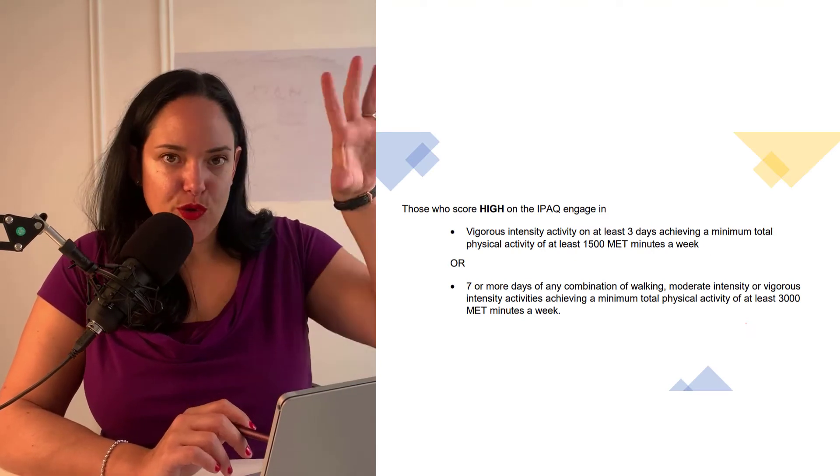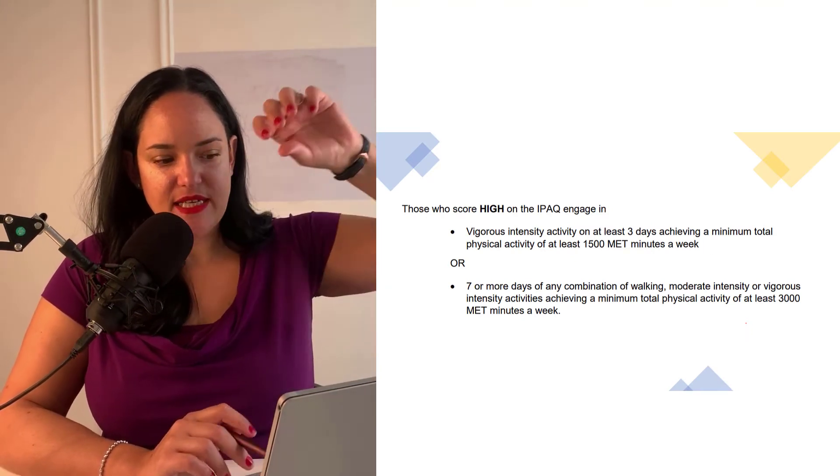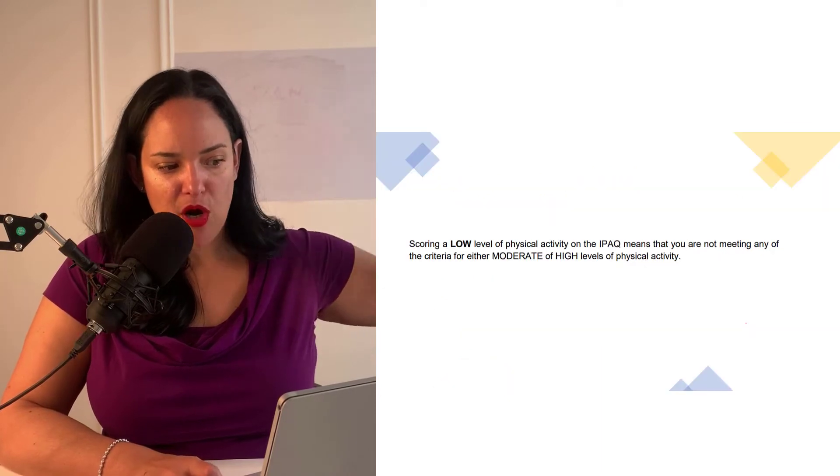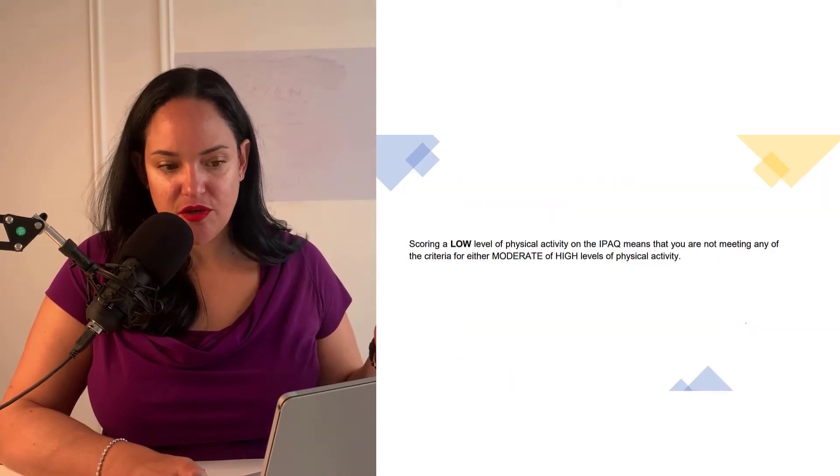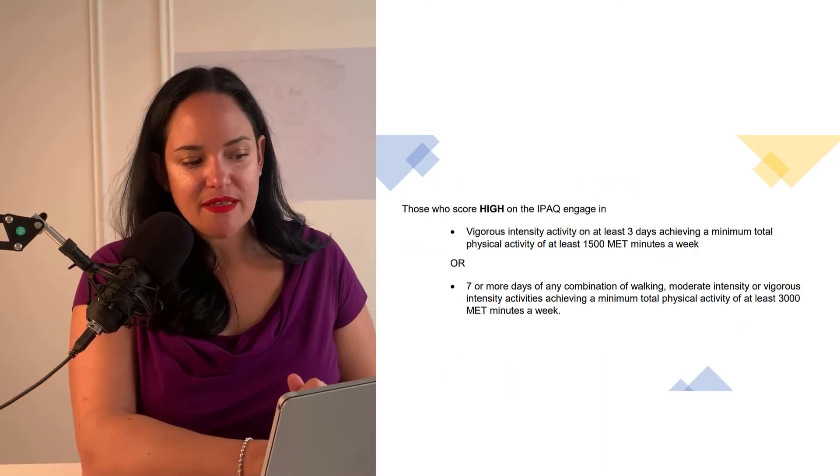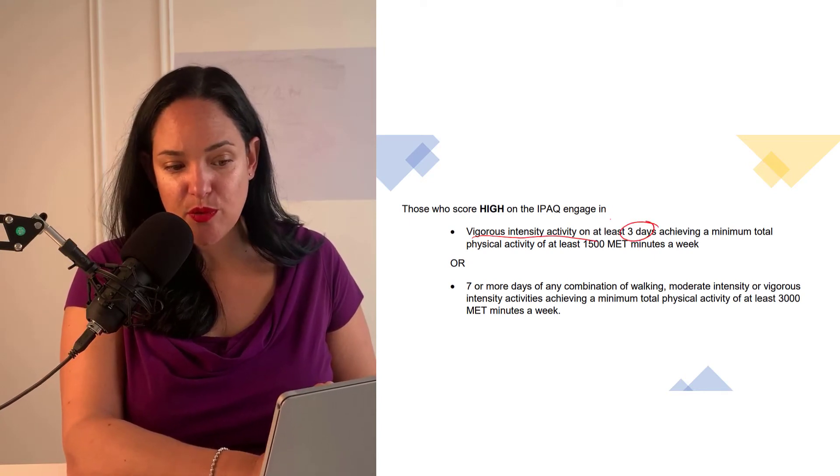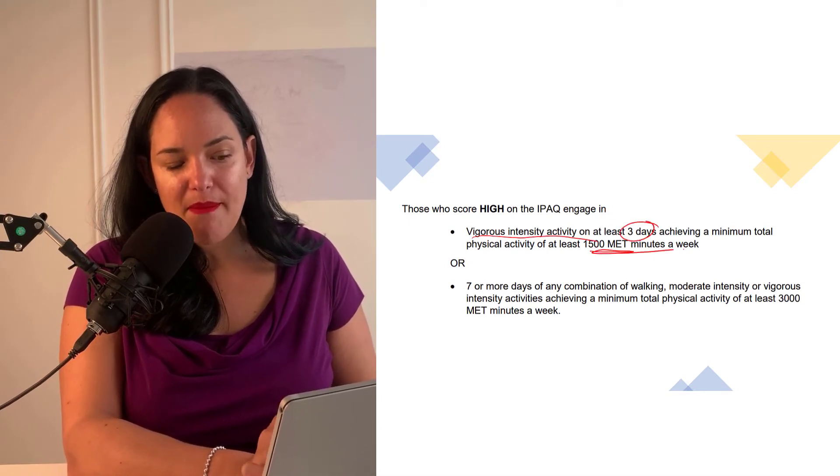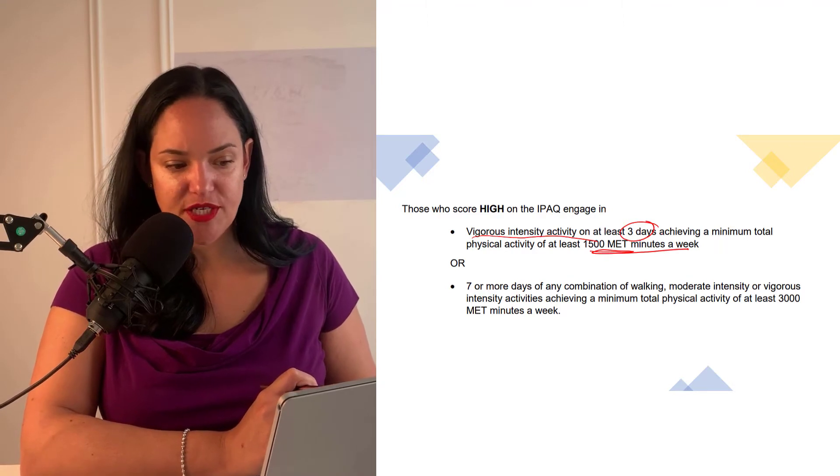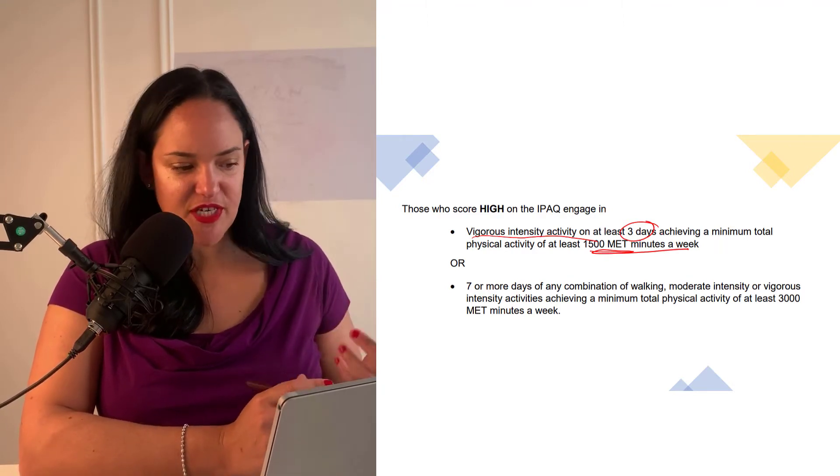And then when you have that, you score the person as either having high, moderate, or low levels of physical activity. So high would mean that they got vigorous intensity activity at least three days per week and a total MET minutes of about 1,500.